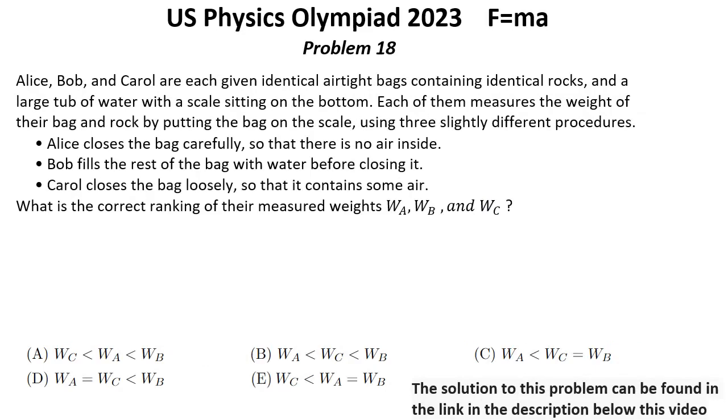Problem 18. Alice, Bob, and Carol are each given identical airtight bags containing identical rocks and a large tube of water with a scale sitting on the bottom. Each of them measures the weight of their bag and rock by putting the bag on the scale using three slightly different procedures.